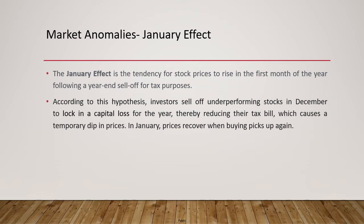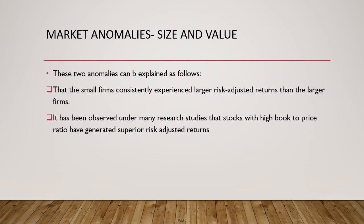Markets are not always efficient — mispricings do occur. One well-known phenomenon is the January Effect. Many investors sell shares in December to book losses — reducing their tax liability — causing a temporary dip in price. In January, prices recover when buying picks up again. This is considered a market anomaly that the Efficient Market Hypothesis cannot fully explain.